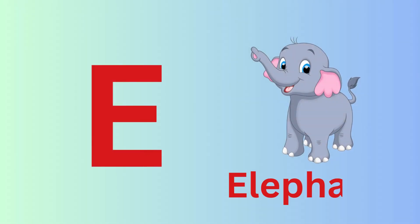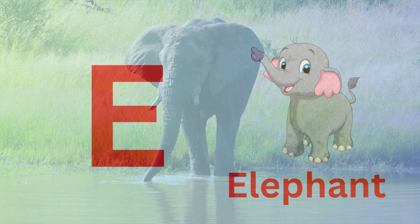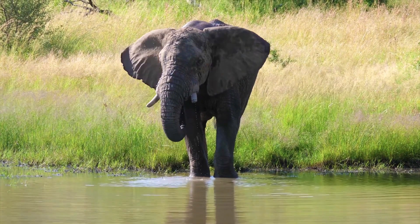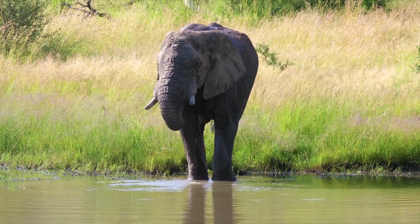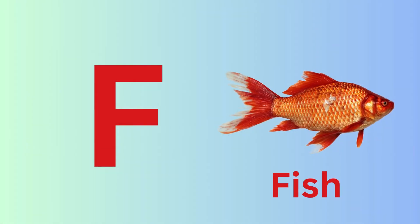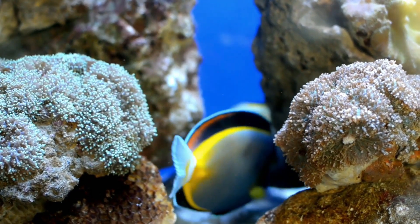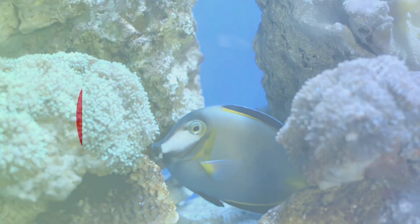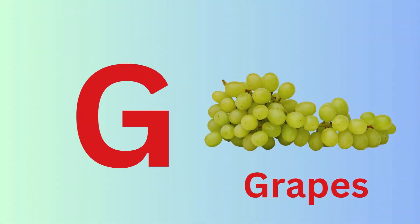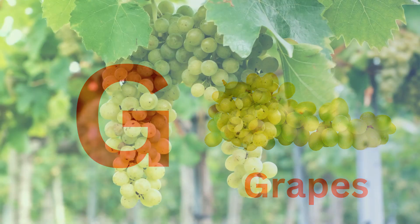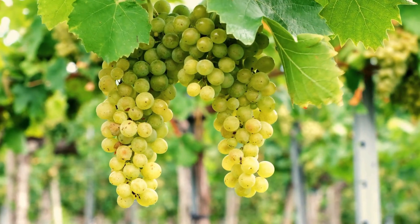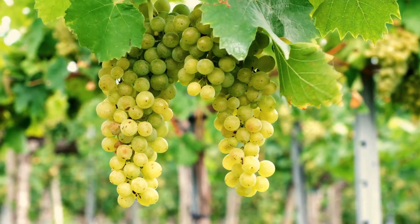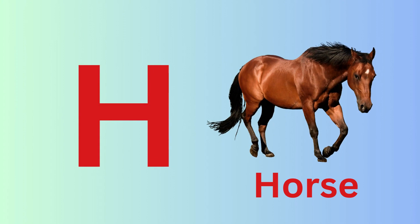E for Elephant. F for Feeds. D for Craps. H for Cores.